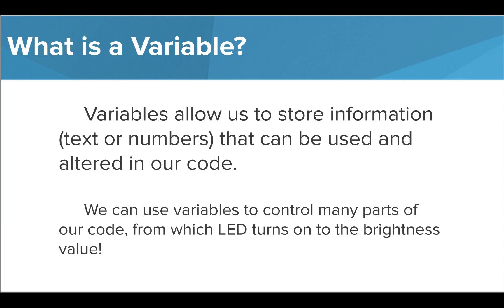Variables give us the ability to store information that we can use in our code. This information can be text or numbers, and can be altered as our code progresses. Variables can be used to control different commands in our programs, such as which LED should turn on or how bright it should be.